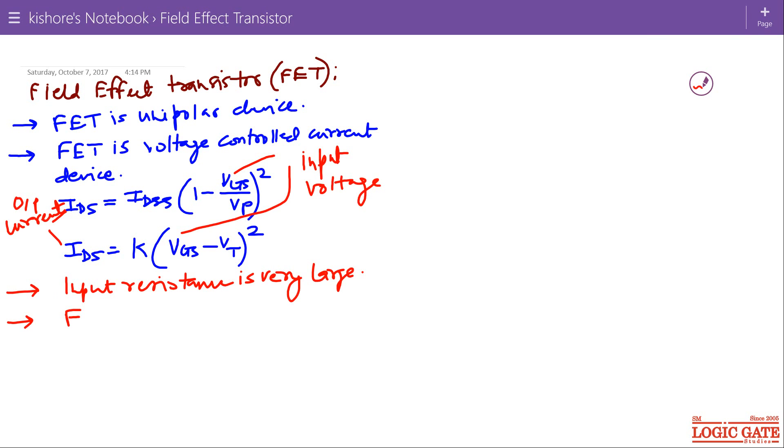FET is more thermally stable as compared to BJT because in BJT there is a problem of thermal runaway. But in case of FET, if temperature increases, the value of drain resistance also increases.